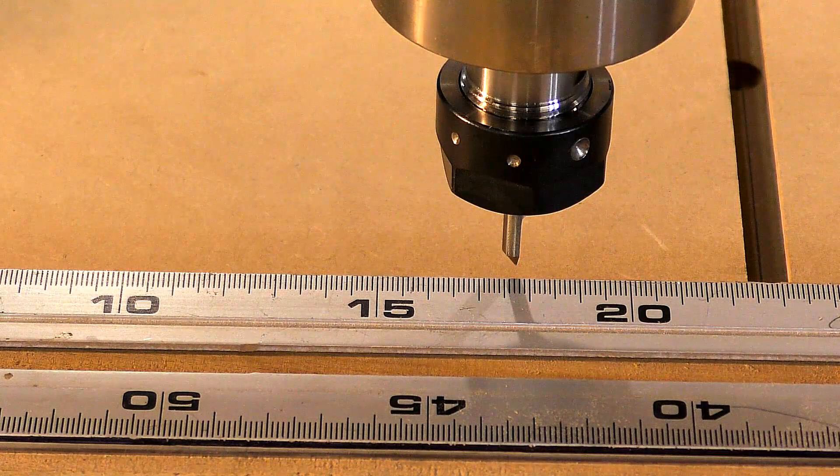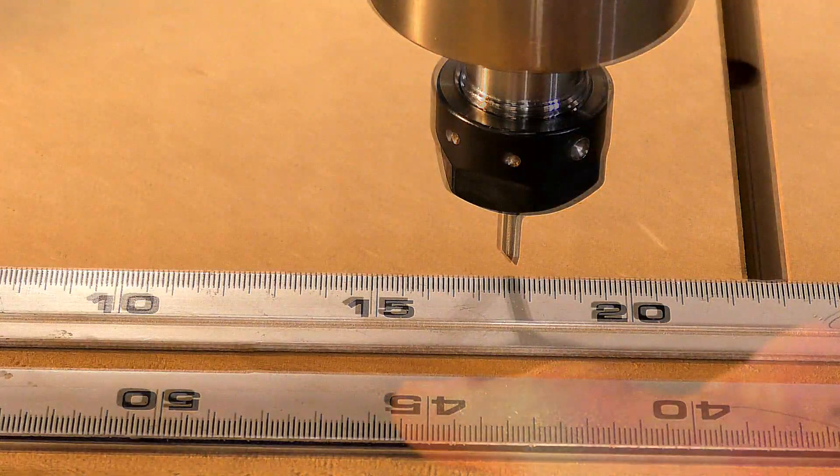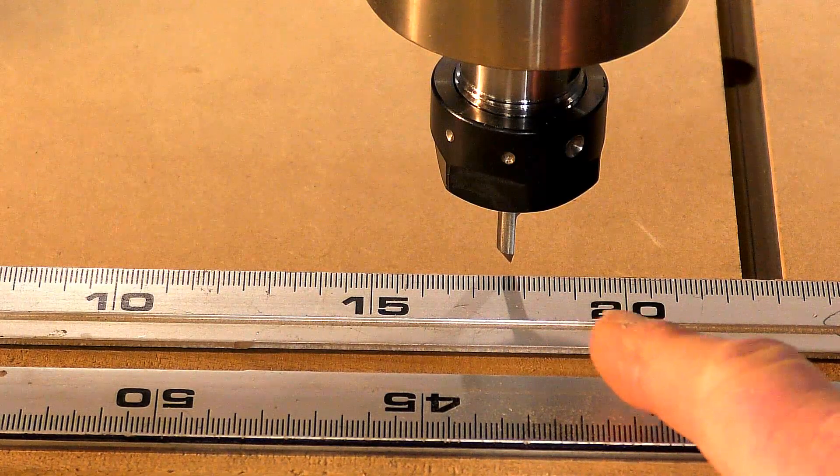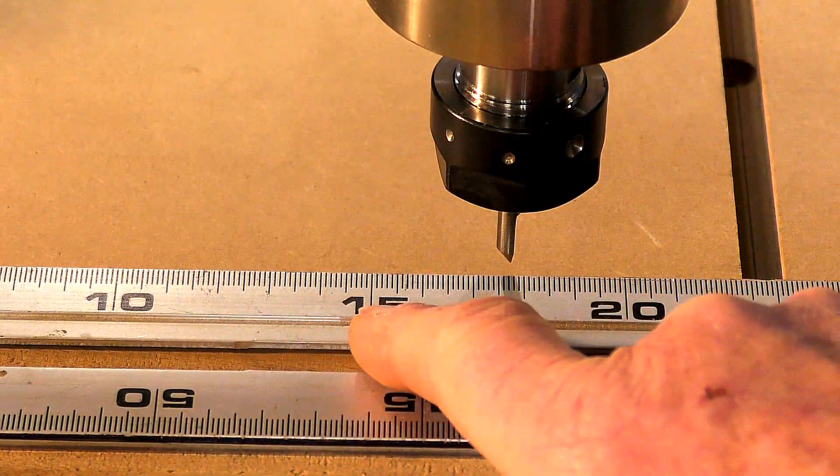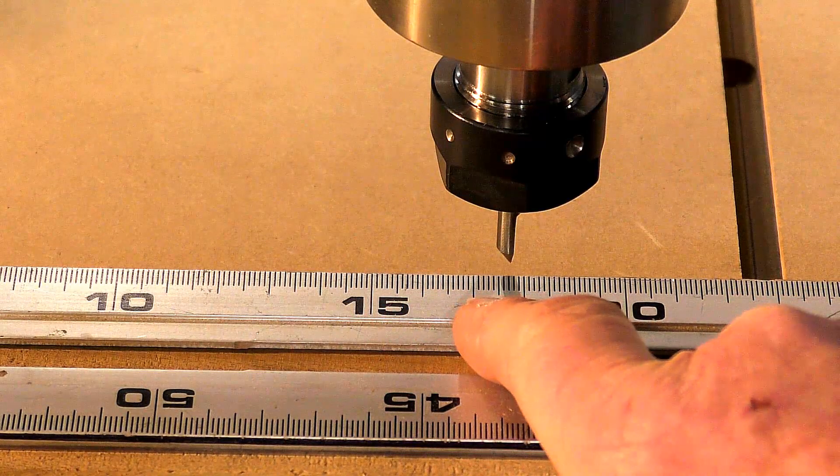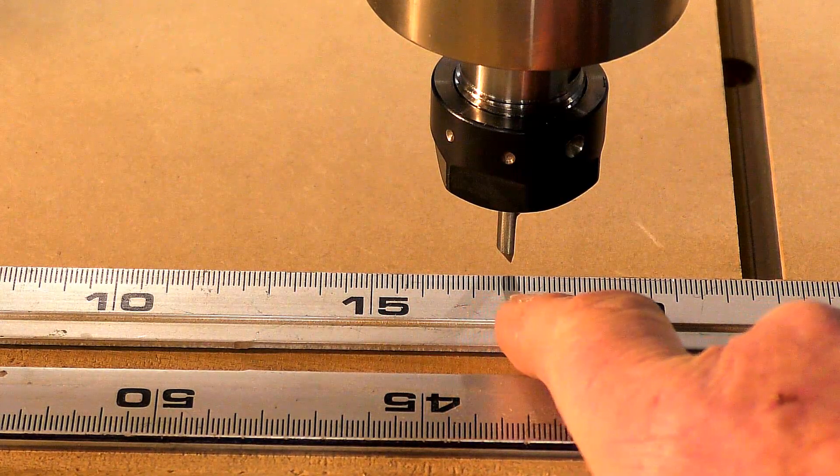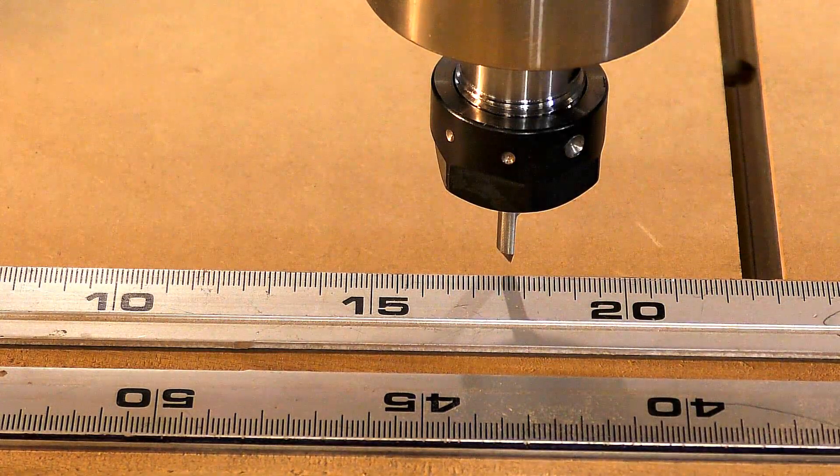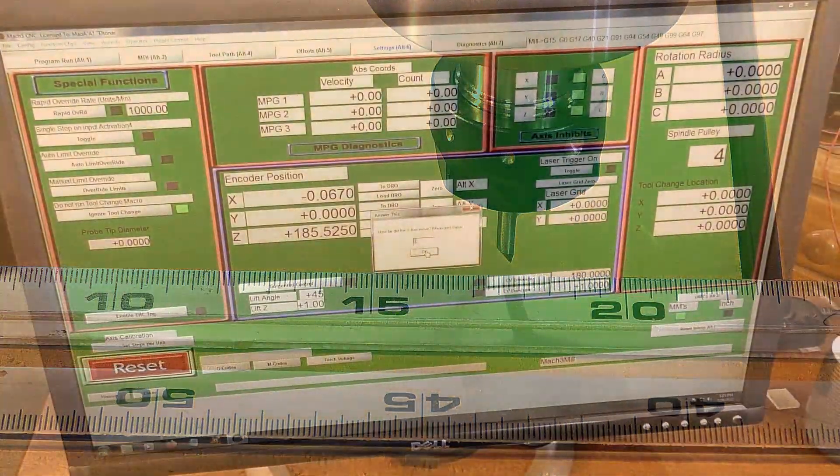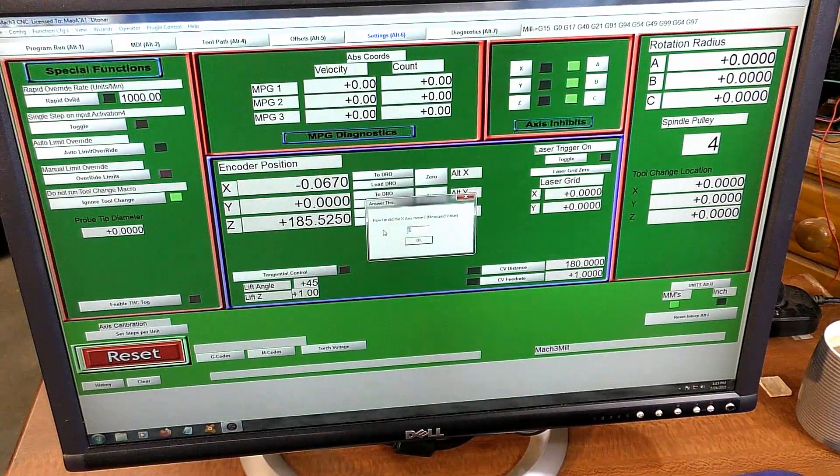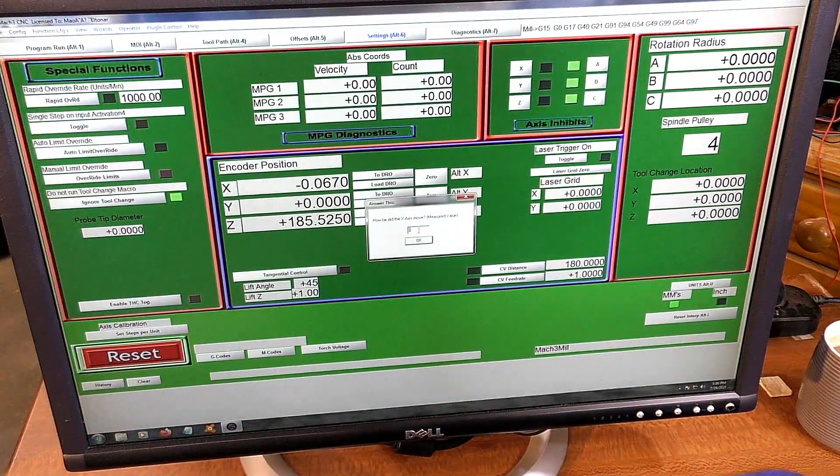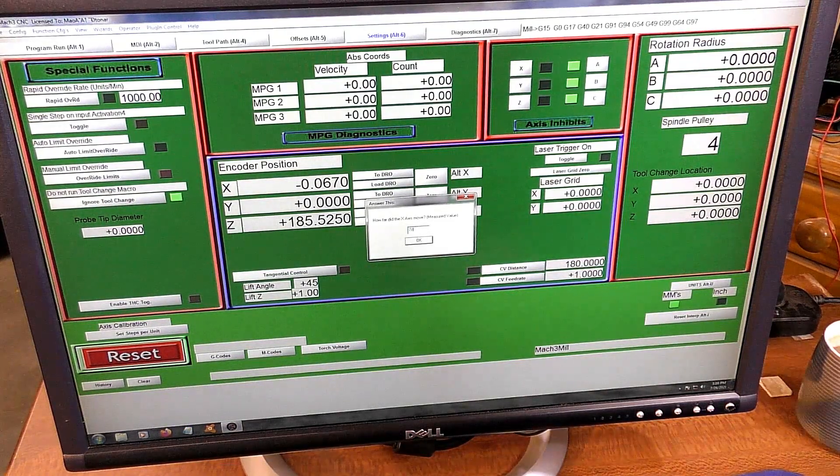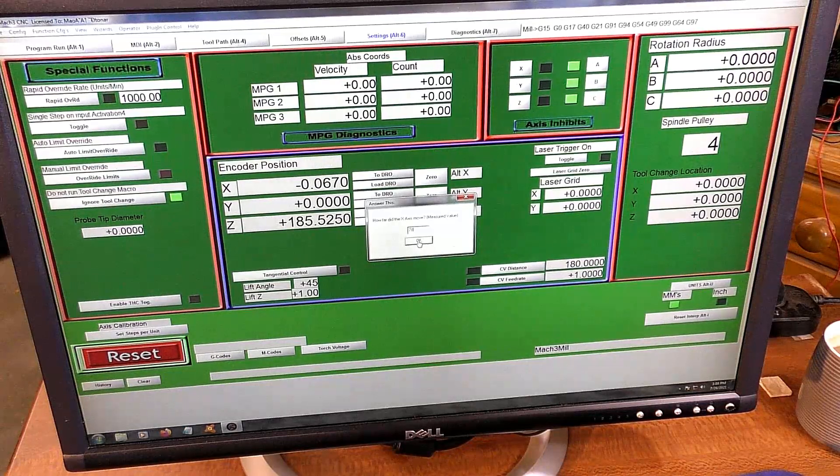And that was a little bit more than 50 millimeters. This has moved quite a lot more than 50. It says 50, 60, 70... I'm going to call that 78 millimeters. So you put that figure in this window, 78 millimeters, and press OK.